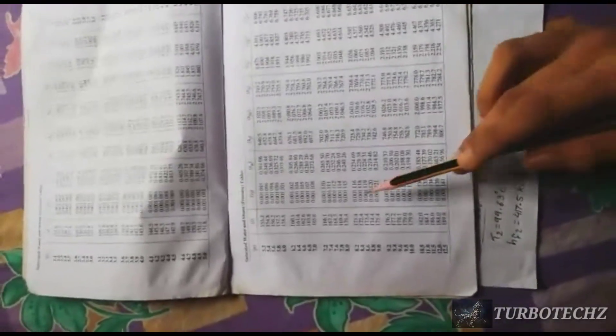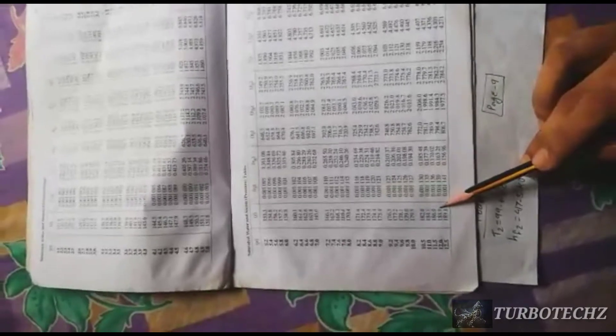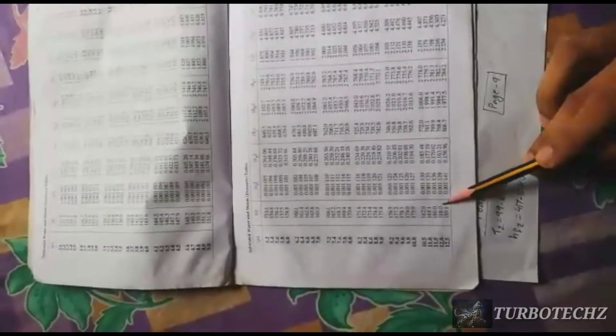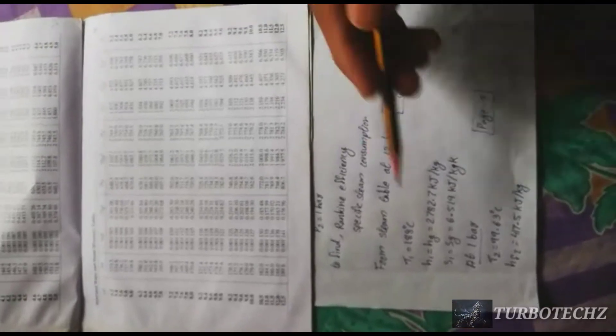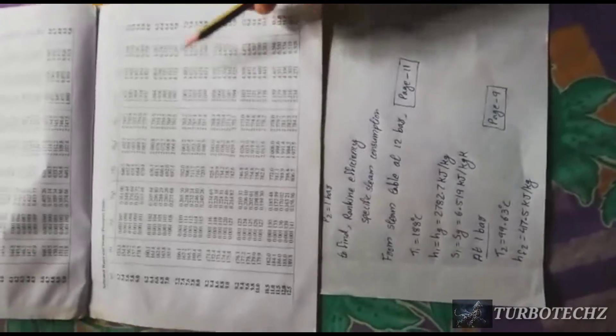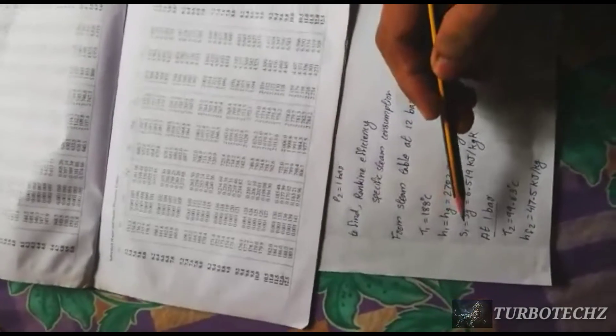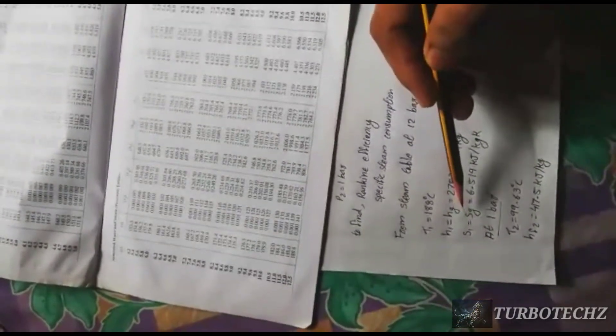Saturated water and steam pressure. At 12 bar pressure condition, page number shows temperature is 188 degrees. H1 is equal to Hg and S1 is equal to Sg.